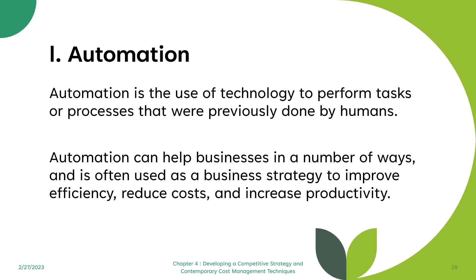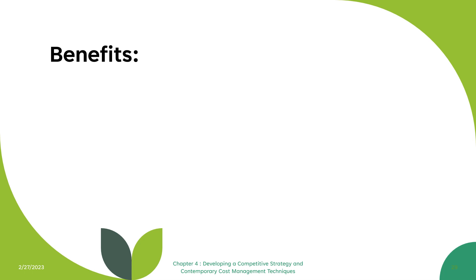Automation is the use of technology to perform tasks or processes previously done by humans. Automation can help businesses improve efficiency, reduce cost, and increase productivity. Benefits include increased efficiency — by automating repetitive or manual tasks, businesses can free up employees to focus on more complex or creative tasks that add more value. For example, automated monitoring systems in Excel that flag whether deliveries are on-time or late, notifying users without manual checking.